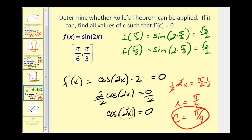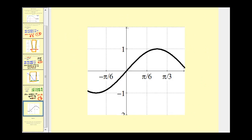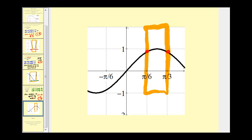Checking graphically: we're considering this function on the interval from pi over six to pi over three. F of a equals f of b, the function is continuous and differentiable, and at x equals pi over four we have a horizontal tangent line — therefore the derivative equals zero. The next video will be on the Mean Value Theorem, which is just an extension of Rolle's Theorem.